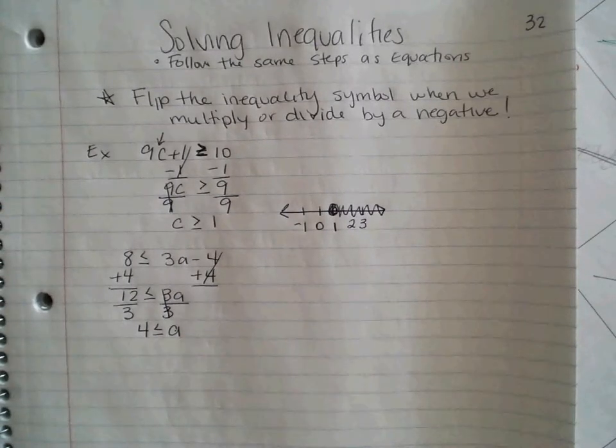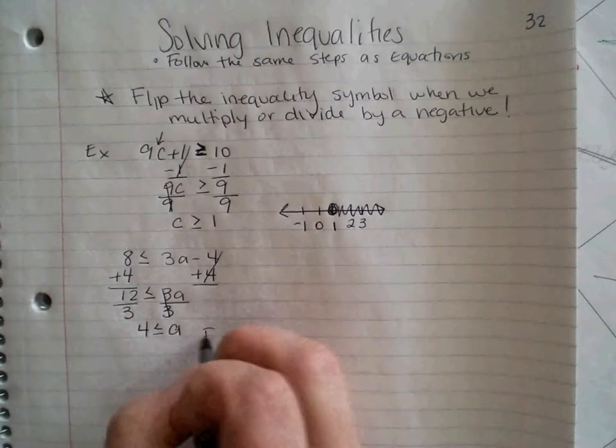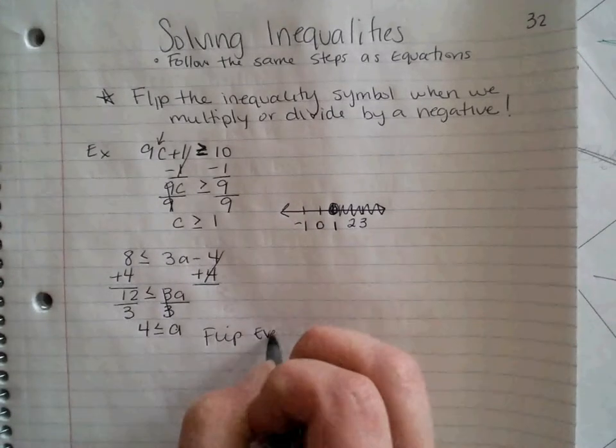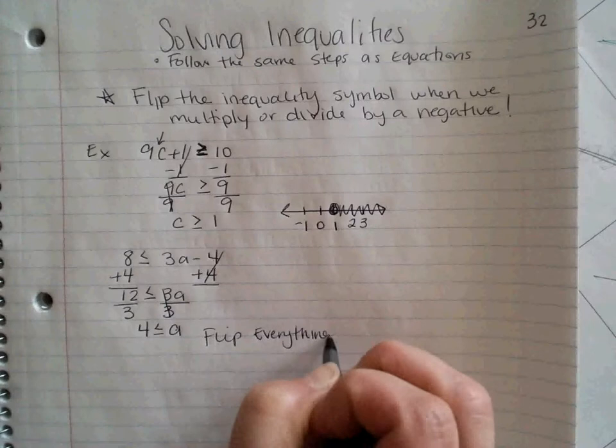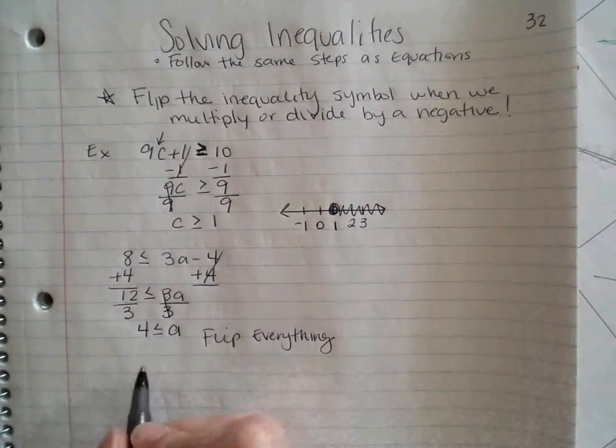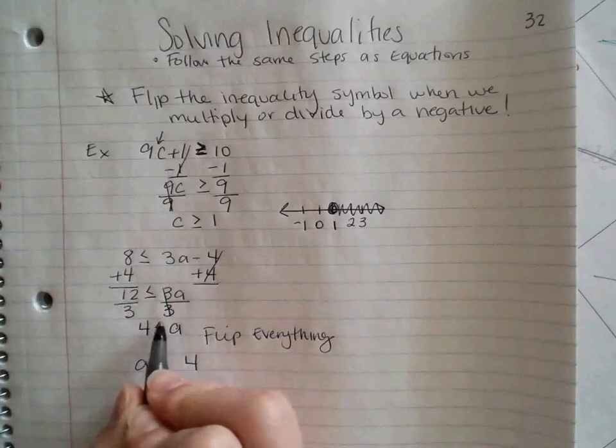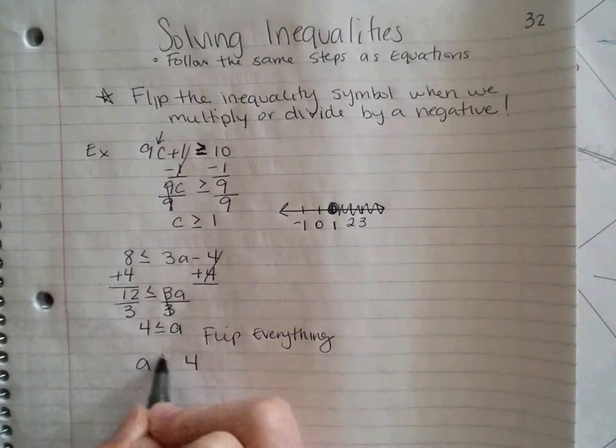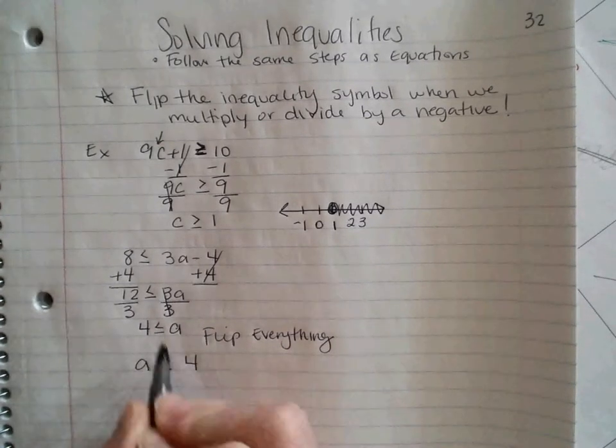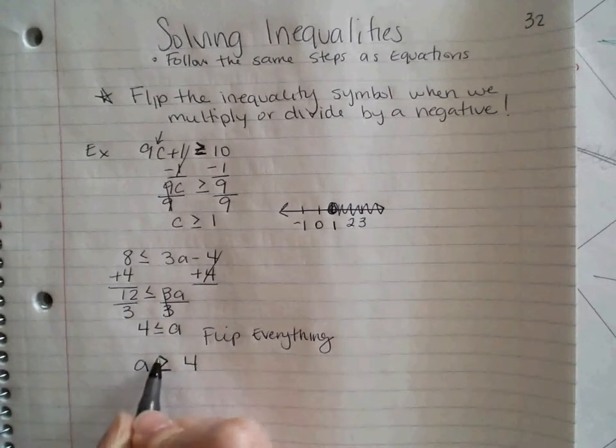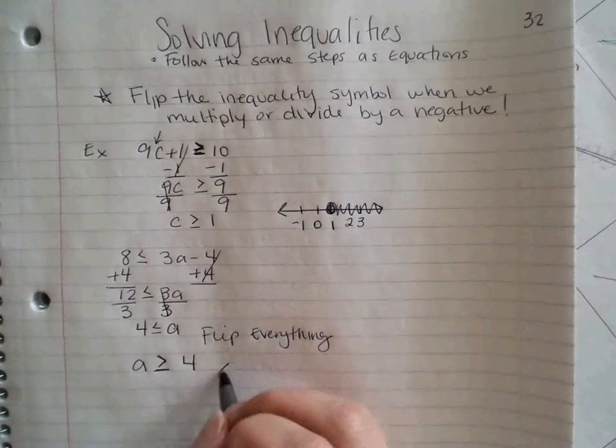Here is what we talked about in our last video. We always want our letter to come first. So when I do this, I have to flip everything, like I'm looking in the mirror. Flip everything. So I'm going to put an a here and a 4 here. I'm going to flip this from the less than to a greater than. Open side is beside my a, so open side needs to be beside my a.